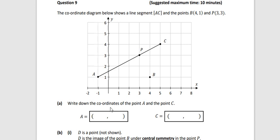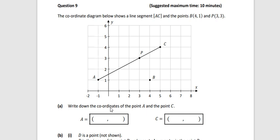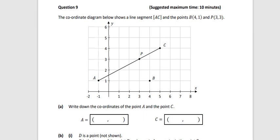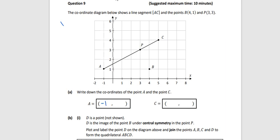For point A, remember you go across first on the x-axis. So minus 1, and then 1 is the y-coordinate. It goes across to minus 1, up to 1. Point B is (4, 1) - across to 4, up to 1.